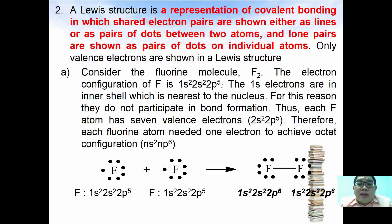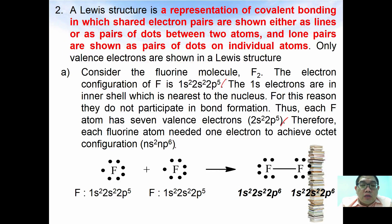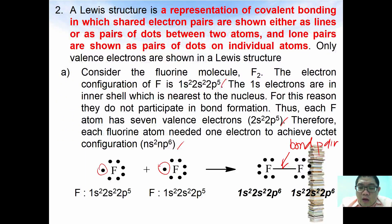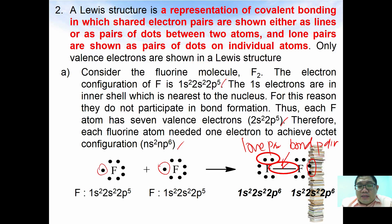For example, the fluorine molecule has an electronic configuration of 1s² 2s² 2p⁵. The 1s electrons are in the shell closest to the nucleus and do not participate in bonding. Each fluorine atom has seven valence electrons (2s² 2p⁵) and needs one more electron to achieve octet configuration (ns² np⁶). Each fluorine atom shares its single electron, forming a covalent bond — the bonding pair — while the remaining electron pairs are lone pairs. Both fluorine atoms thereby achieve eight electrons and satisfy the octet rule.